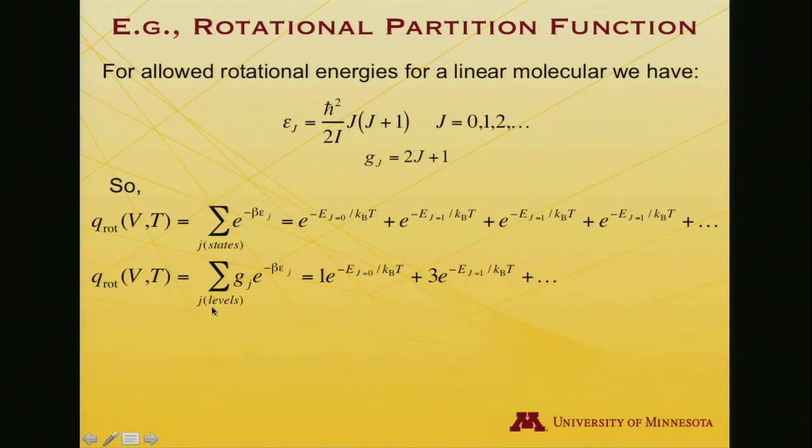The alternative way to write it is to sum over levels. Here's the degeneracy. So I get one for the first level, e to the minus e, j equals 0, plus 3, e to the minus j equals 1, and the next term would be plus 5, e to the minus e, j equals 2 over kT, and so on.